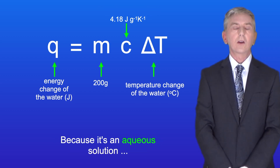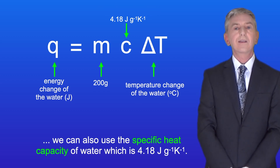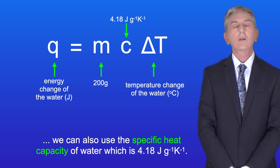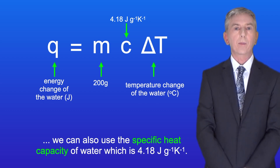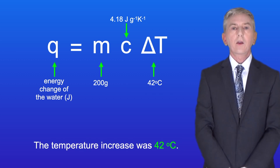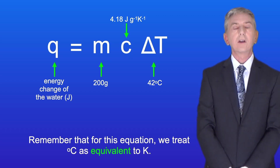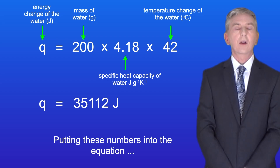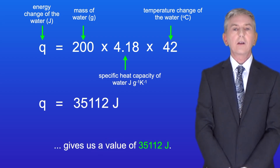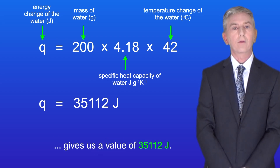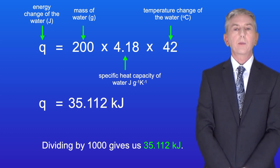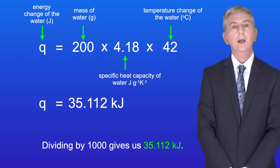Because it's an aqueous solution, we can also use the specific heat capacity of water, which is 4.18 joules per gram per kelvin. The temperature increase was 42 degrees Celsius, and remember that for this equation we treat degrees Celsius as equivalent to kelvin. Putting these numbers into the equation gives us a value of 35,112 joules. Dividing by 1000 gives us 35.112 kilojoules.